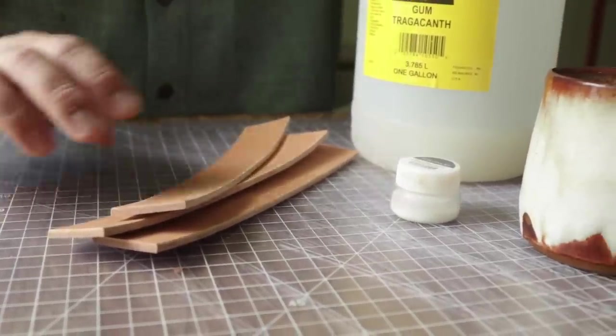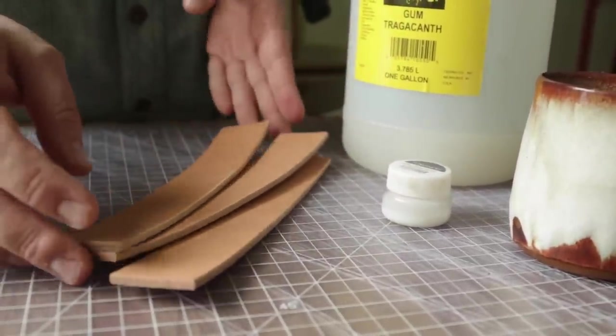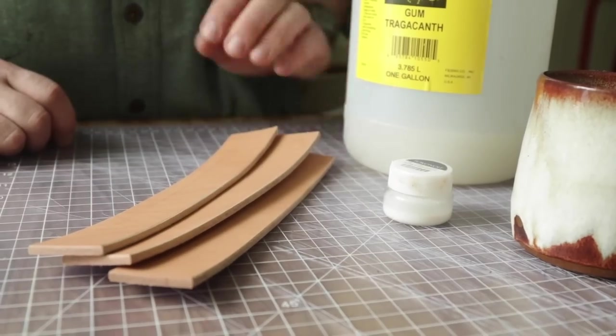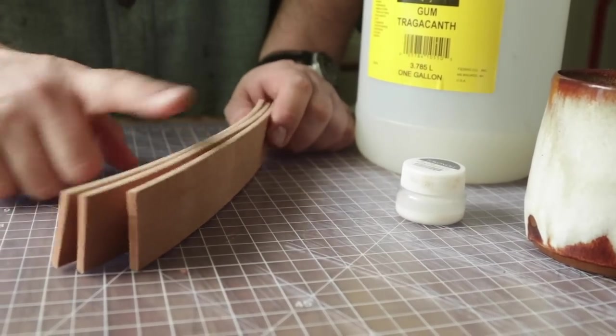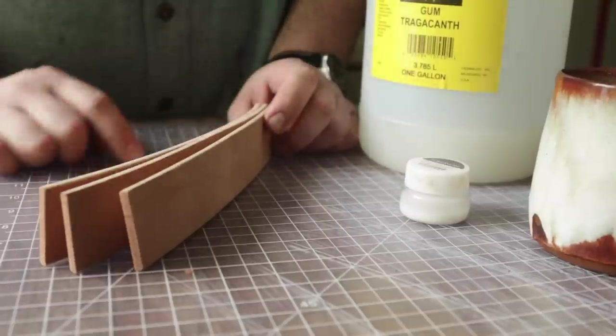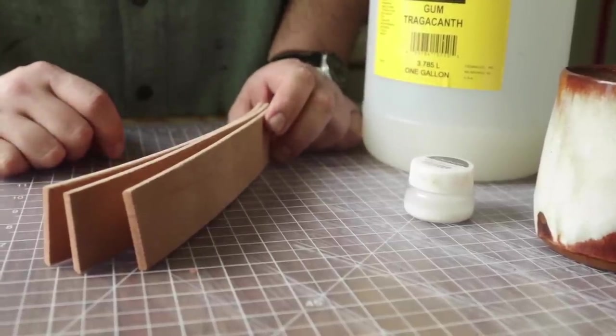I have three pieces of 10 ounce leather prepared so that you can see them on camera. These are all sanded down, they're beveled, and then sanded to 400 grit. So let's get into it.